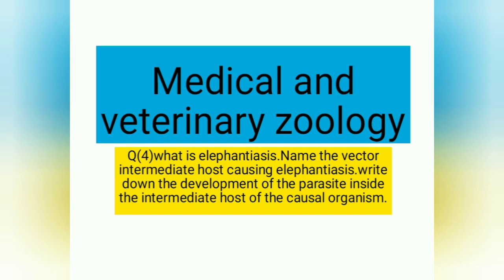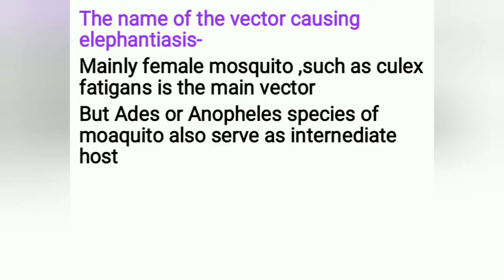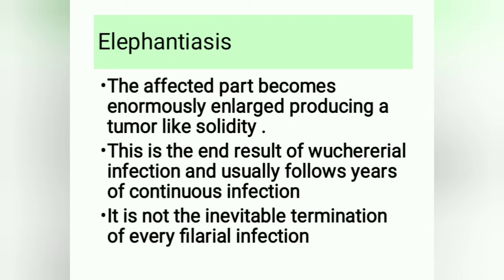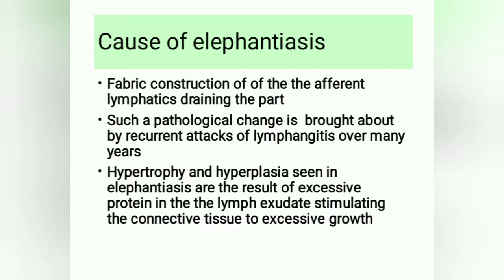Our fourth question: what is elephantiasis? Name the vector and intermediate host causing elephantiasis, and describe the development of the parasite inside the intermediate host. The main vector is the female mosquito — chiefly Culex fatigans, but Aedes and Anopheles species also serve as intermediate hosts. Elephantiasis: the affected part becomes enormously enlarged, producing a tumor-like solidity. This is the end result of filarial infection and usually follows years of continuous infection; it is not the inevitable termination of every filarial infection.